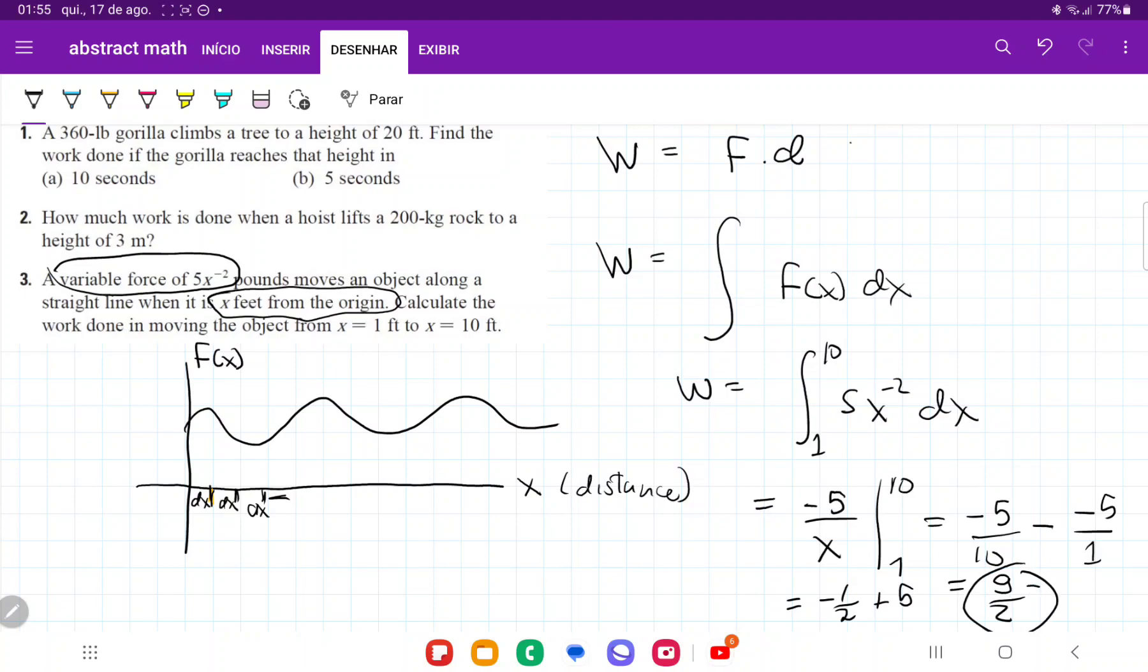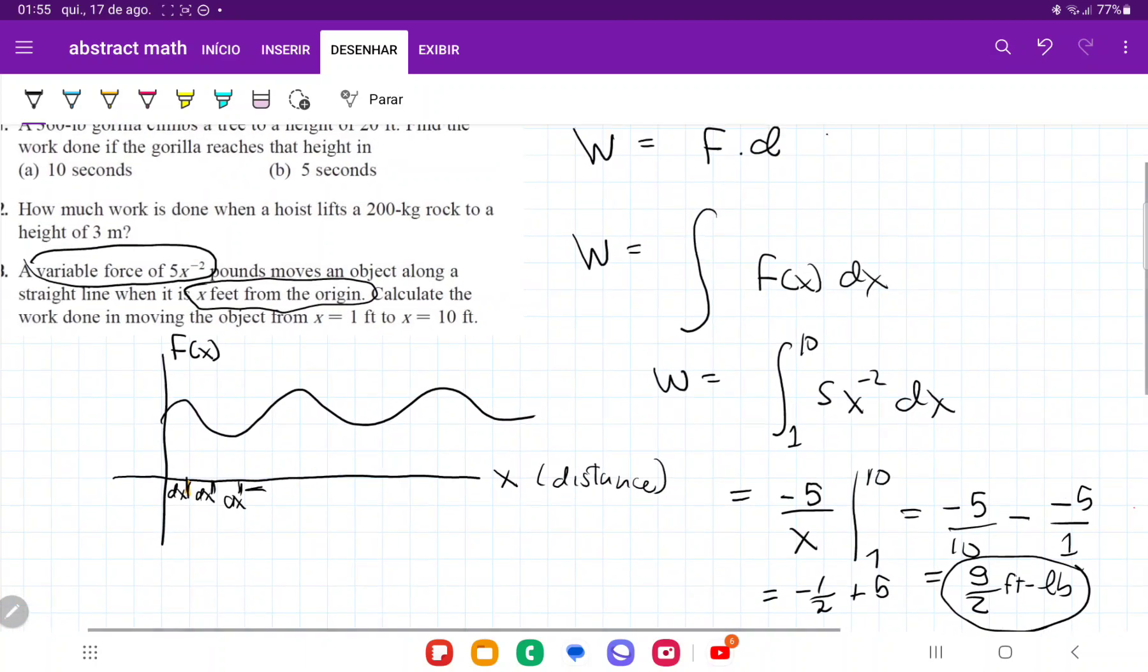And so 9 halves foot-pounds. And so this is the amount of work that we do to move this variable force from the distance of 1 to the distance of 10. So remember that we're integrating because we're summing up the force times the distance, but this force is changing. And so the way that we sum up something that is changing is through the integral.